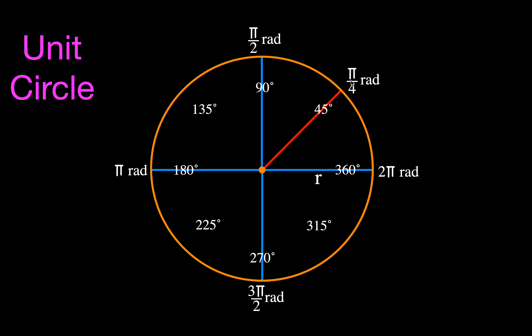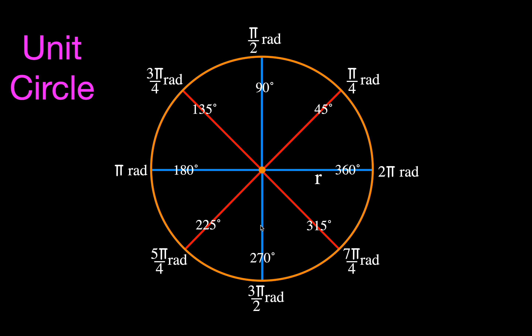That's one pi over four. Two pi over four reduces to pi over two, so 90 degrees. Three pi over four is 135 degrees. Four pi over four reduces to pi, that's 180 degrees. Five pi over four is 225 degrees. Six pi over four reduces to three pi over two, that's 270 degrees. Seven pi over four is 315 degrees. Eight pi over four reduces to two pi, that's 360 degrees.